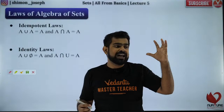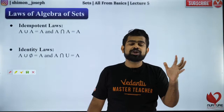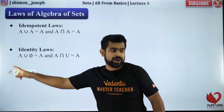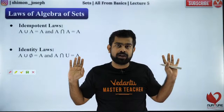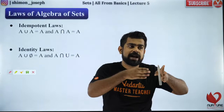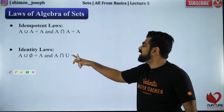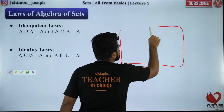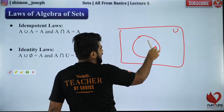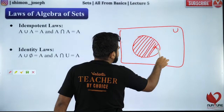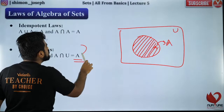Next are the identity laws. A∪φ = A: when you add the null set to A, you get back A itself, because adding nothing to A gives A. A∩U = A: the intersection of A with the universal set — looking at the Venn diagram, the intersection of A and the universal set will be set A only. This is what we call the identity law.